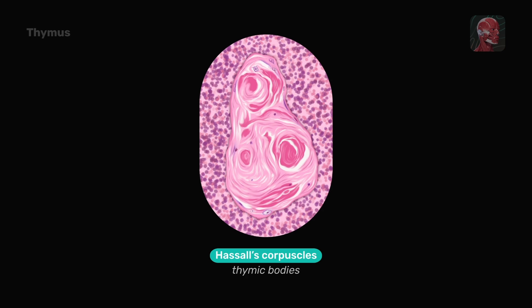Additionally, the medulla contains structures known as Hassal's corpuscles, which are concentric arrangements of epithelial reticular cells. Thymocytes eventually undergo positive and negative selection. Once this process is complete, the mature T-cells enter the circulation and become a crucial part of the adaptive immune system.